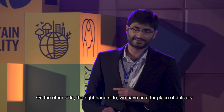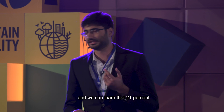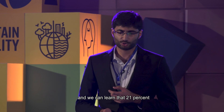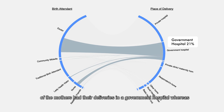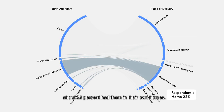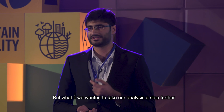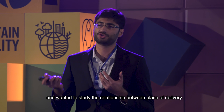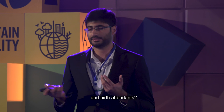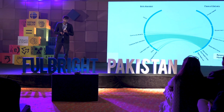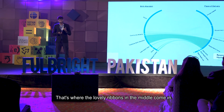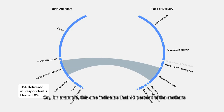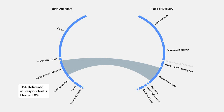On the right-hand side, we have arcs for place of delivery. We can learn that 21% of the mothers had their deliveries in a government hospital, whereas about 22% had them in their own homes. If we want to study the relationship between place of delivery and birth attendants, the ribbons in the middle come in. For example, one ribbon indicates that 18% of mothers had their deliveries at home and were helped by dais, or traditional birth attendants.